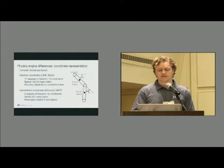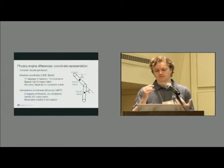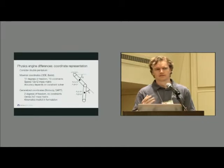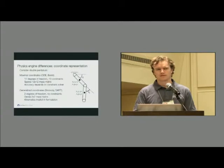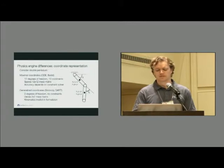Generalized coordinates on the other hand, they choose a different approach. In this case they would choose theta one and theta two. They look at the definition of joints in the system and define the degrees of freedom based on that. So you would have in this case a dense 2 by 2 mass matrix with no constraints. Your kinematics are implicit, they're more accurate. You don't need a constraint solver to get that.